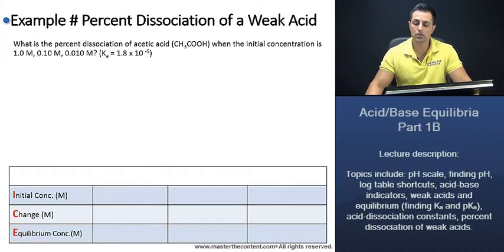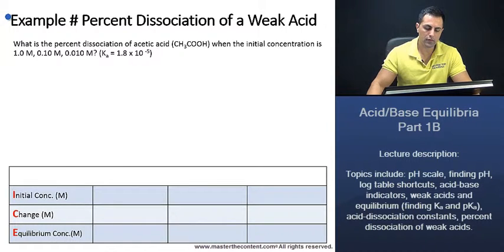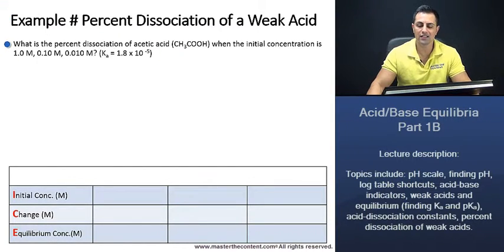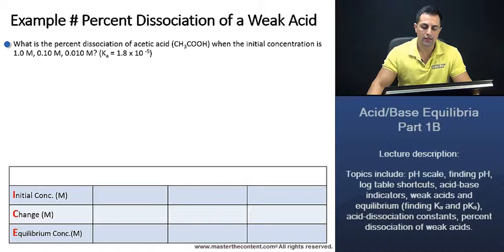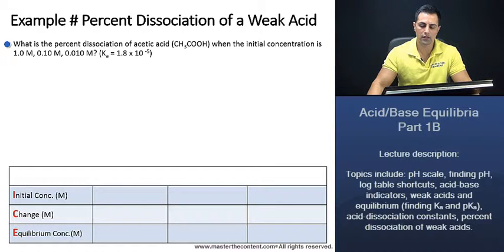Example: percent dissociation of a weak acid. What is the percent dissociation of acetic acid when the initial concentration is 1.0 molar, 0.1 molar, and 0.01 molar? The acid dissociation constant given to us is 1.8 times 10 to the power of negative 5.